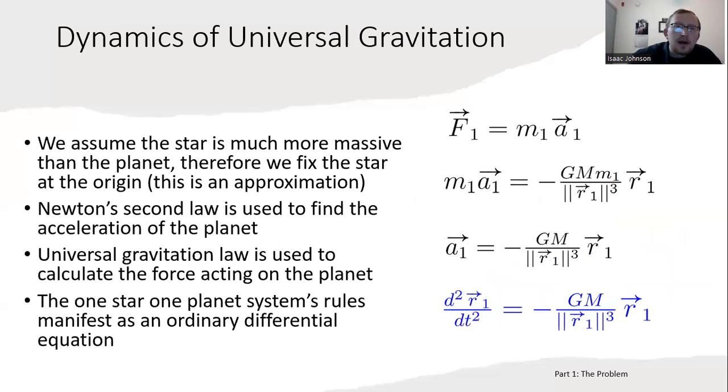Once again, the star is much more massive than the planet, so we fixed the star at the origin. This is an approximation—actually the sun would be orbiting the center of mass of the solar system, but so much of the mass is the star that we're just going to pretend it doesn't move. Newton's second law is used to find the acceleration on the planet: force equals mass times acceleration.